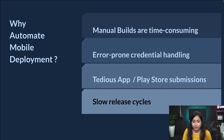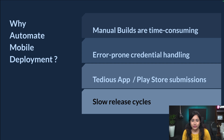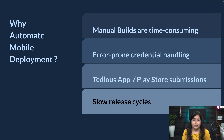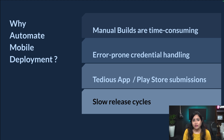Before we jump into the CI/CD process, let's try to understand why to even automate the mobile deployment, because we still can manually build, manually sign, and manually submit applications. Then why automate? There are many reasons. Manual builds are very time consuming. We have all seen how Xcode takes up a lot of time in just validating the application. And sometimes developers have different local setups.